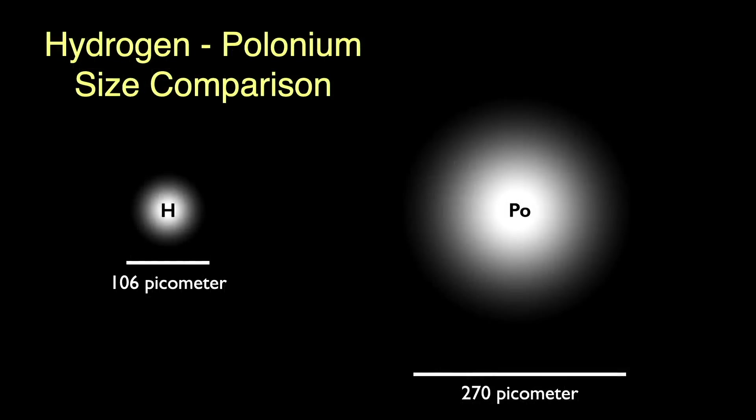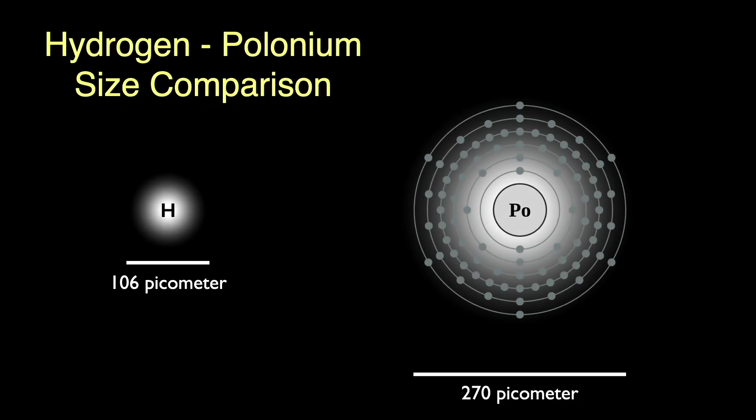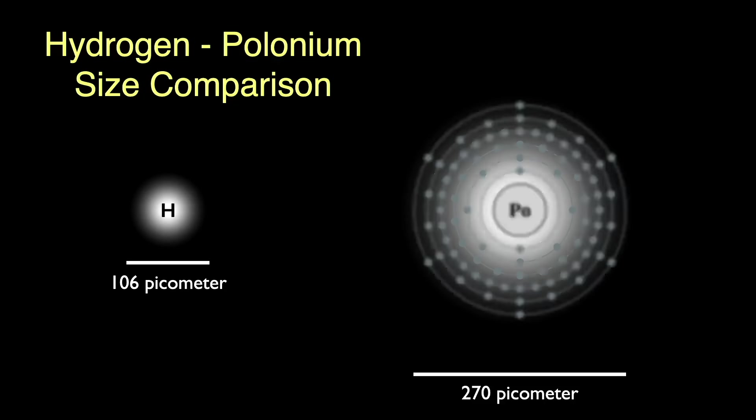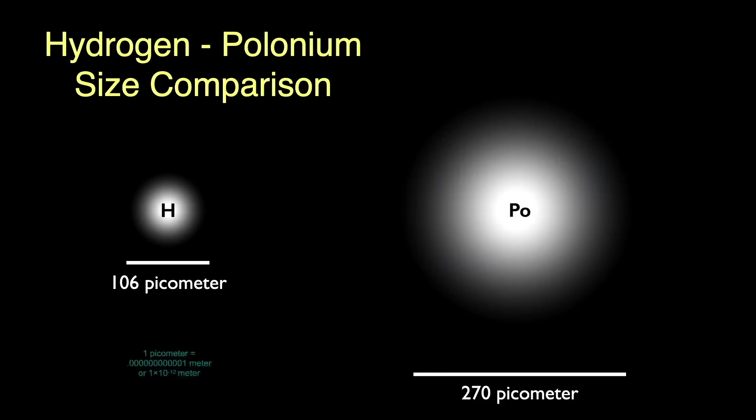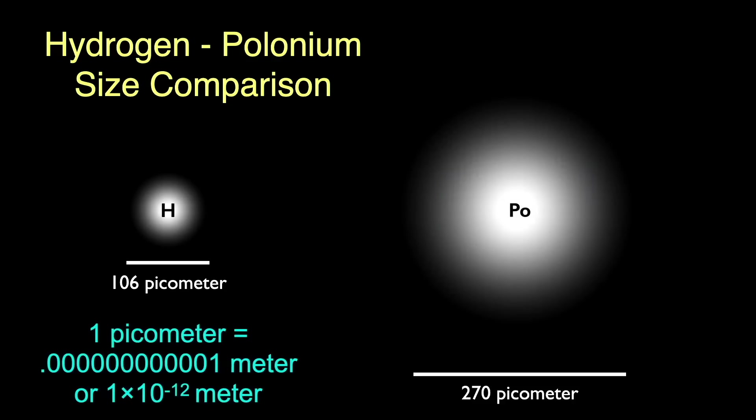If we compare the size of the polonium atom to that of hydrogen, we'd see something like this. The polonium atom is about 2.5 times the size of hydrogen. Here's its electron structure. By the way, a picometer is a trillionth of a meter. Atoms are dreadfully small.